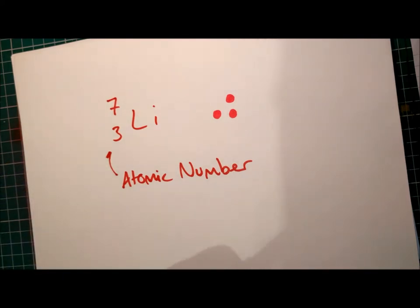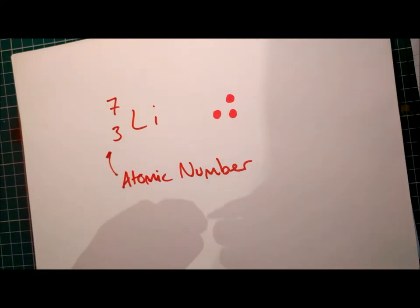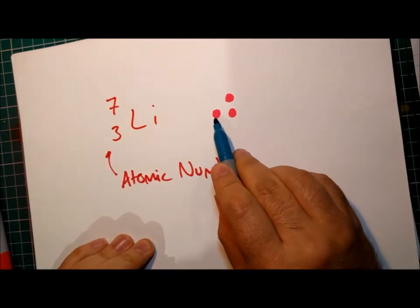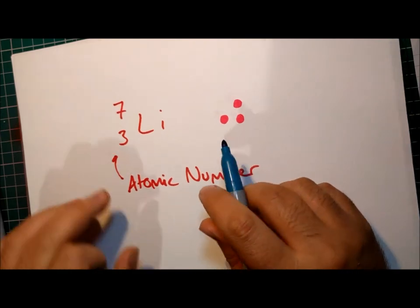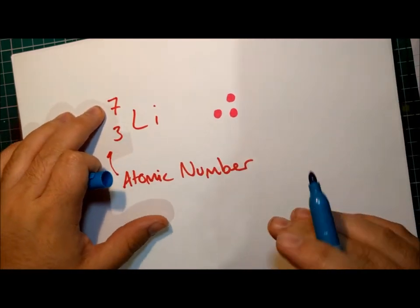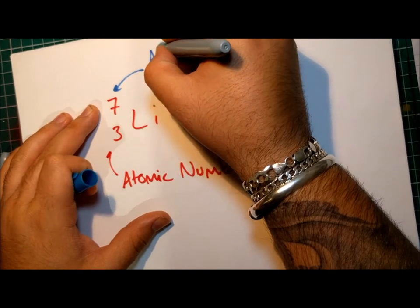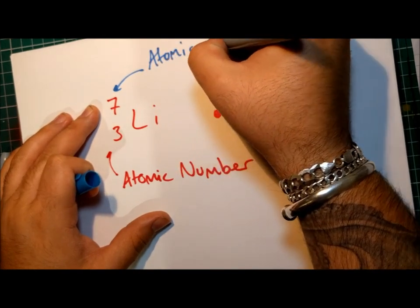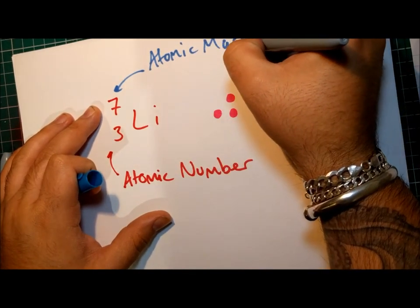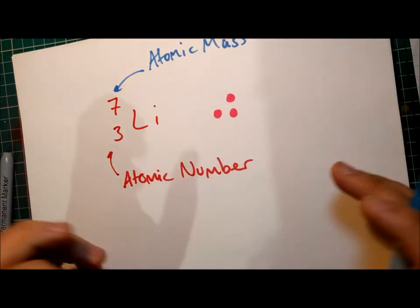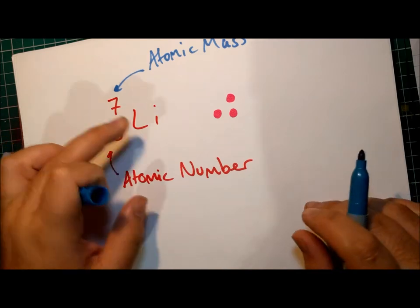And then we've got this 7. Now the 7 tells us how many things there are in the nucleus of this lithium. So at the moment we've drawn 3 things in, but we know that in total there must be 7 because lithium has an atomic mass of 7. So we've got 3 here and it ends up being 7, so what do we add to 3 to get to 7?